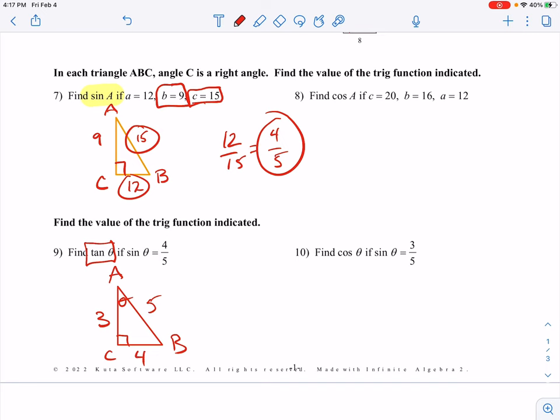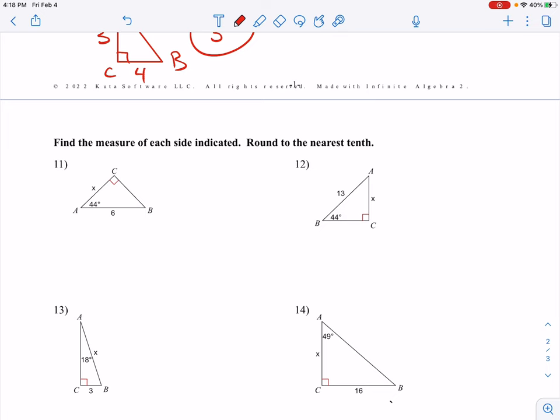This one's asking us to do the tangent of theta. Tangent is the opposite over the adjacent. That's it. 4 thirds.